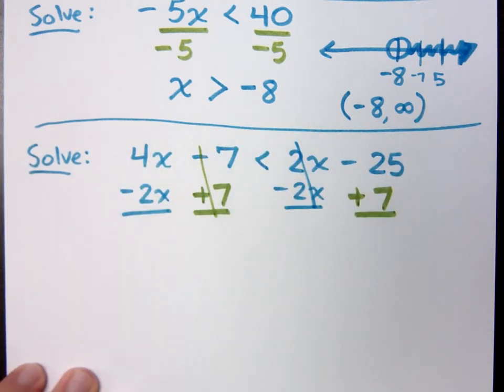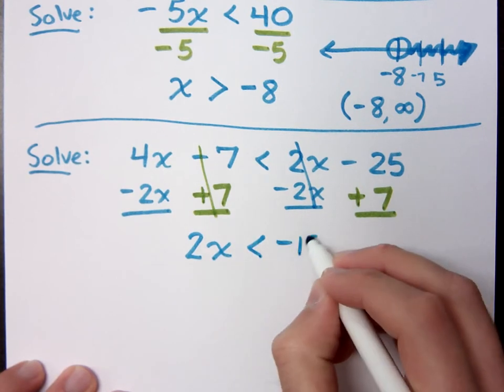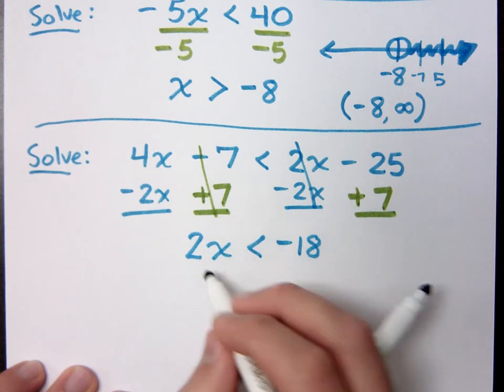So what does my inequality look like now? Notice, all you do is use the addition property so no inequality symbols get flipped. 2x is less than negative 18, right? How do you solve that one?